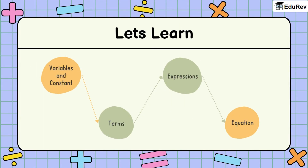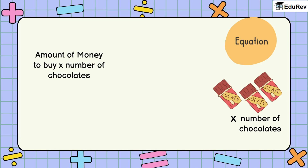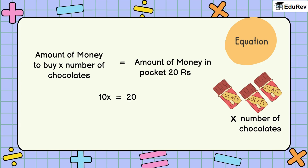Now, what if we want to compare two algebraic expressions using an equal sign in between? For example, what if I say that the amount of money you need to buy X chocolates is equal to the 20 rupees in your pocket? Then we can very easily write down that 10X is equal to 20. Here, 10X is the algebraic expression on the left side of the equal sign and 20 is the algebraic expression on the right side. This, as a whole, is an equation.